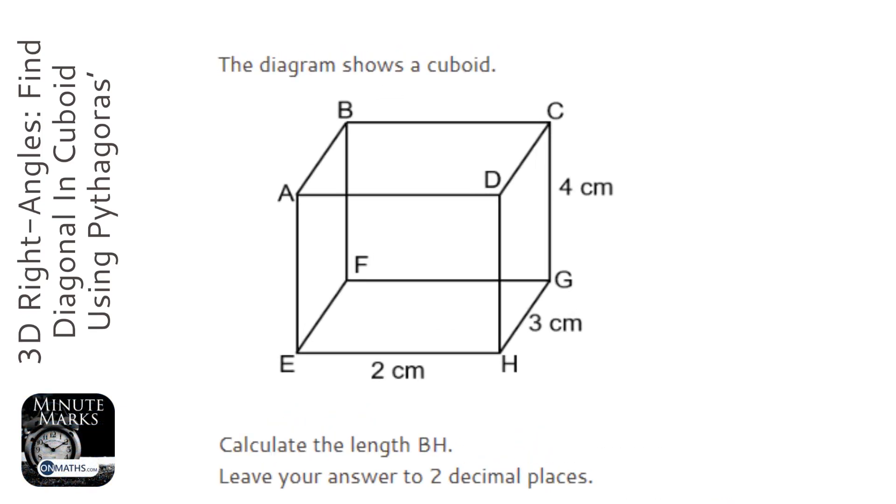Okay, with these questions you're always going to have to find one and then another. The first one we need to find to work out BH is the length of FH, and then when we've got that one, we can find the length BH.